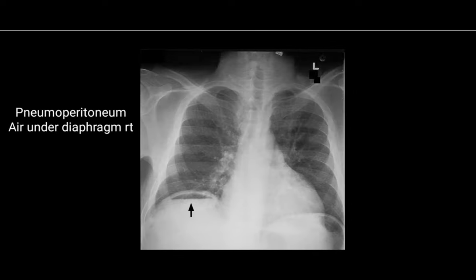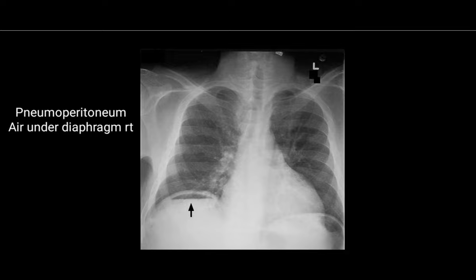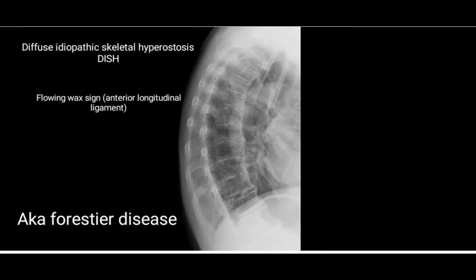This is an image of pneumoperitoneum — the most asked image in both NEET and INICET. The left lobe of the diaphragm and the right dome are visible. Air under the right dome of the diaphragm indicates pneumoperitoneum, meaning air in the peritoneal cavity has risen up. Air on the left side under the diaphragm is normal as it comes from the stomach.